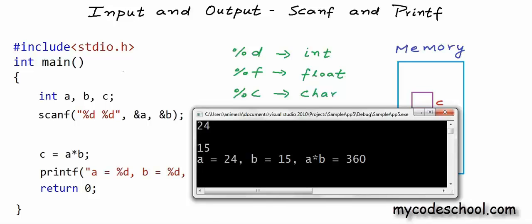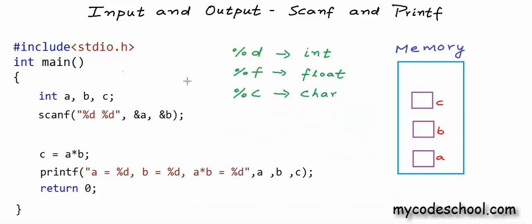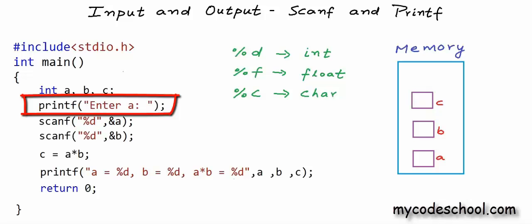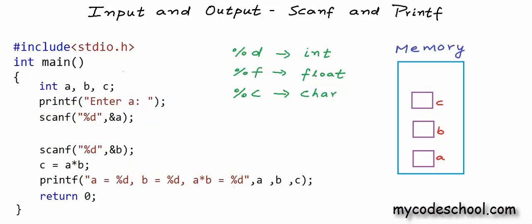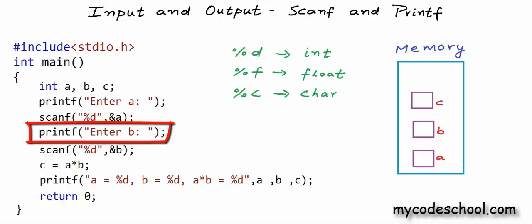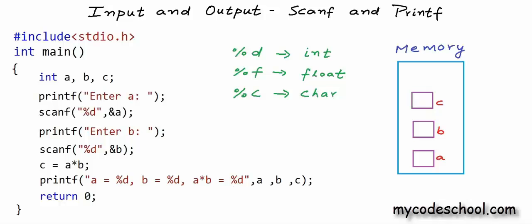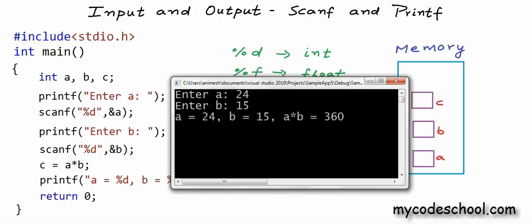You can write a scanf like that, but I prefer writing one scanf for each variable, so I'll revert back to two scanfs. Now I want to make this program better. Before the first scanf, I'll write a printf saying 'Enter A', and after the first scanf and before the second scanf, I'll write another printf saying 'Enter B'. Running the program now, we first print 'Enter A' and pause for the user to enter a number. After entering the first number, we print 'Enter B' and pause for the second number. This looks much better — our program is now printing messages asking the user to input the numbers.